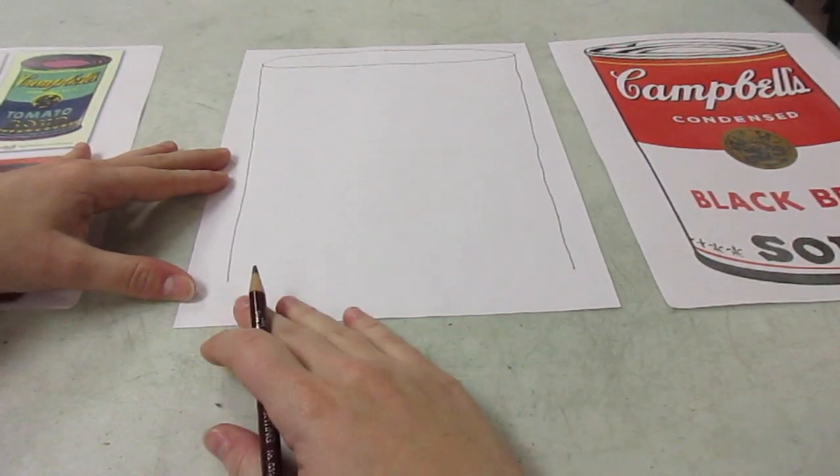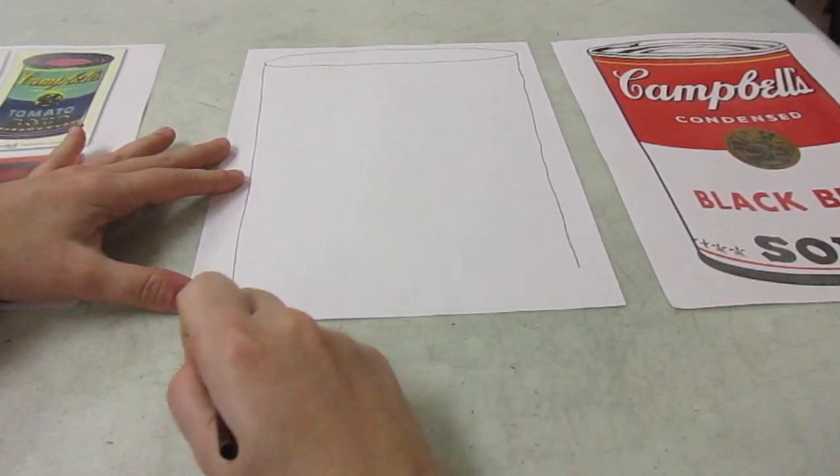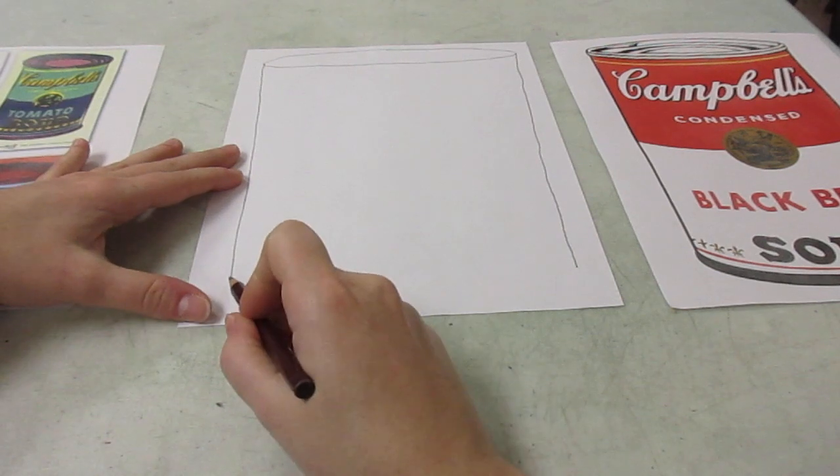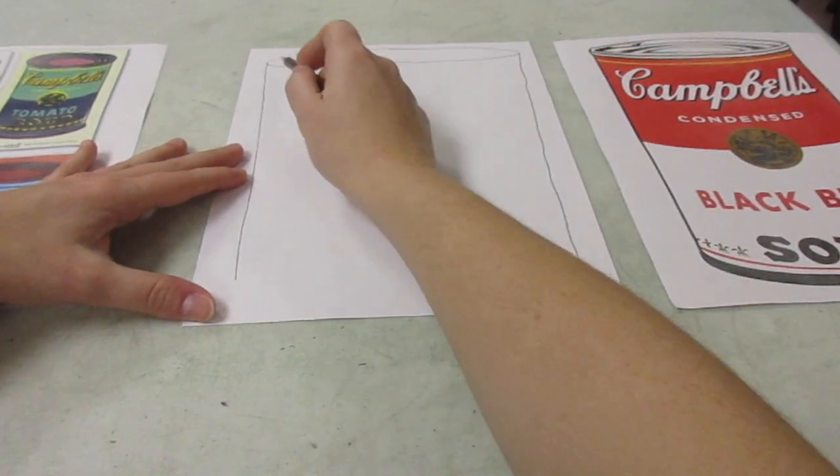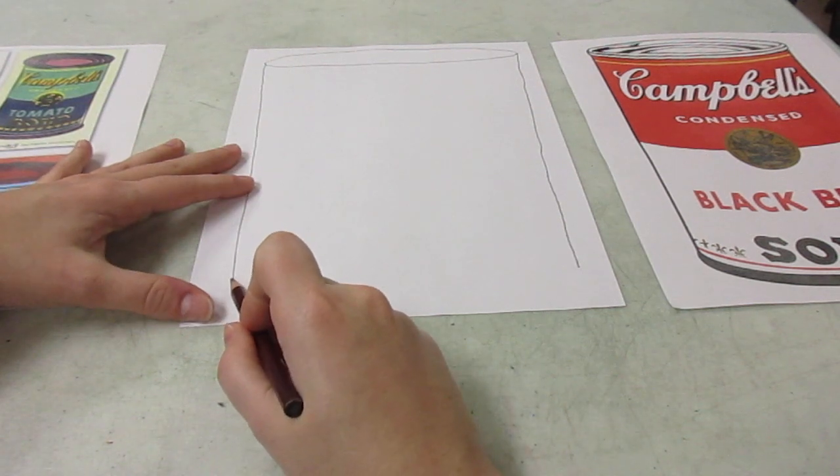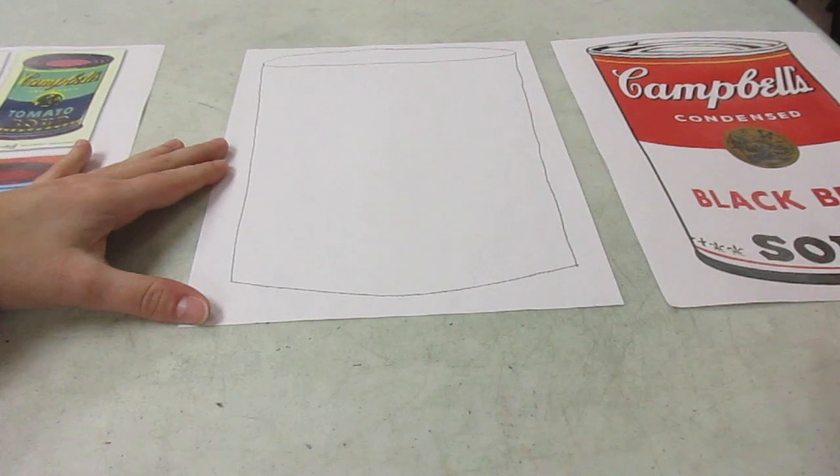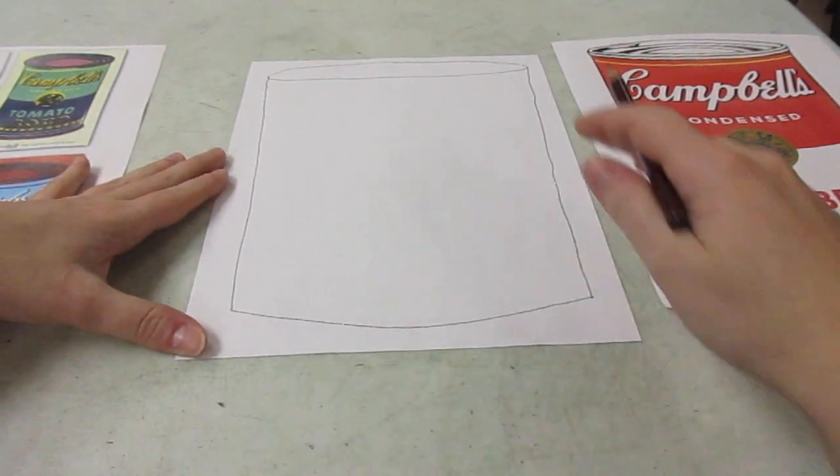Okay, now to make sure it looks like a 3D can, it's very important that you don't make this a straight line. This line needs to be curved, just like our oval is curved. So you go over here and you make a curve. Okay, so now I've got the outline of a can.